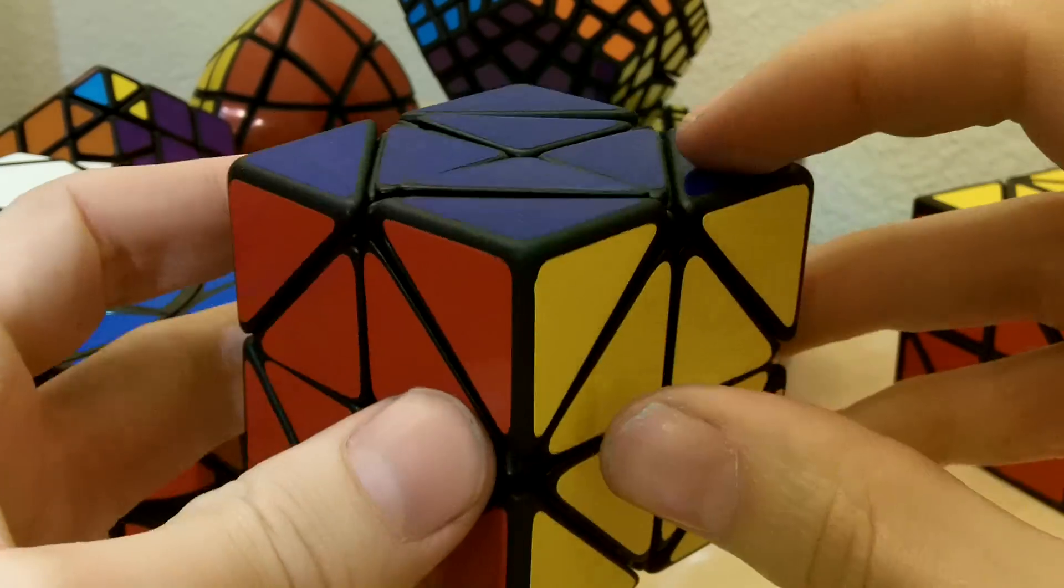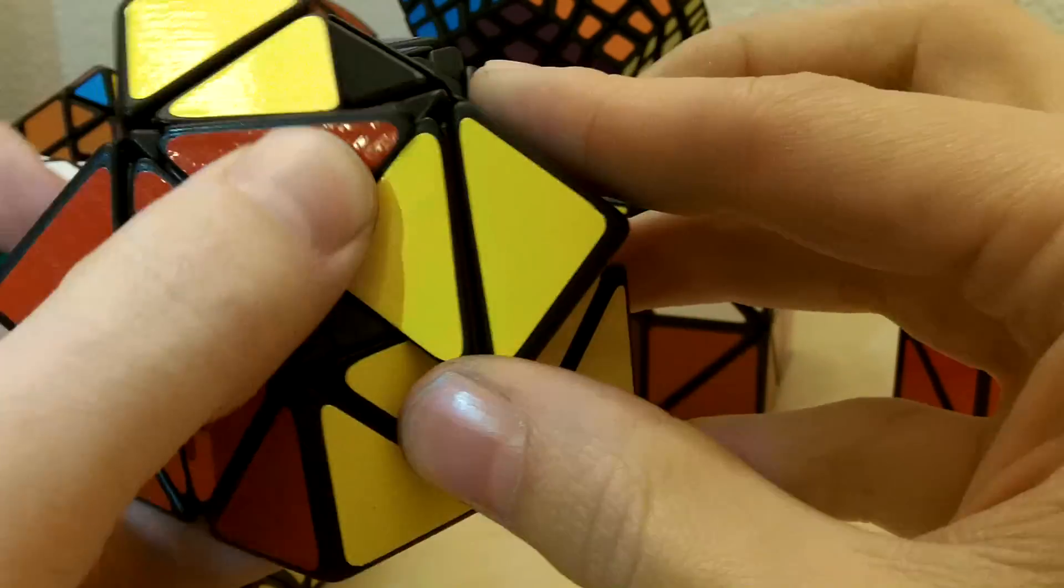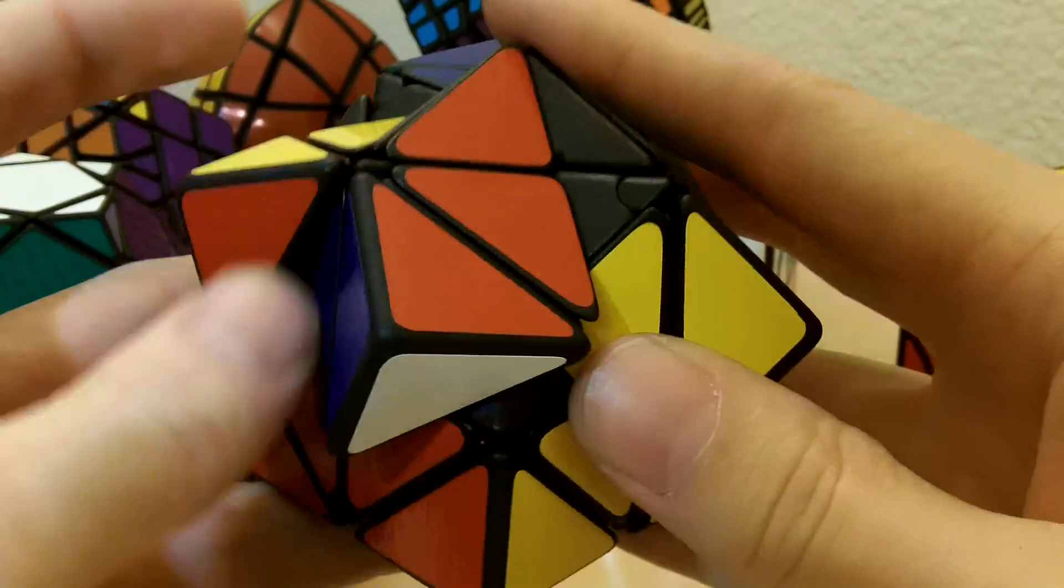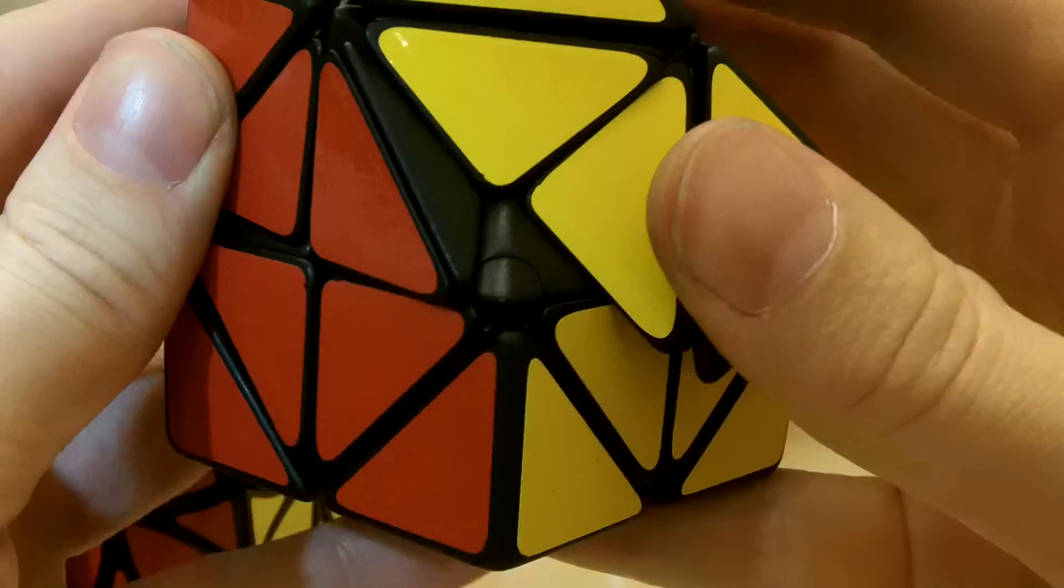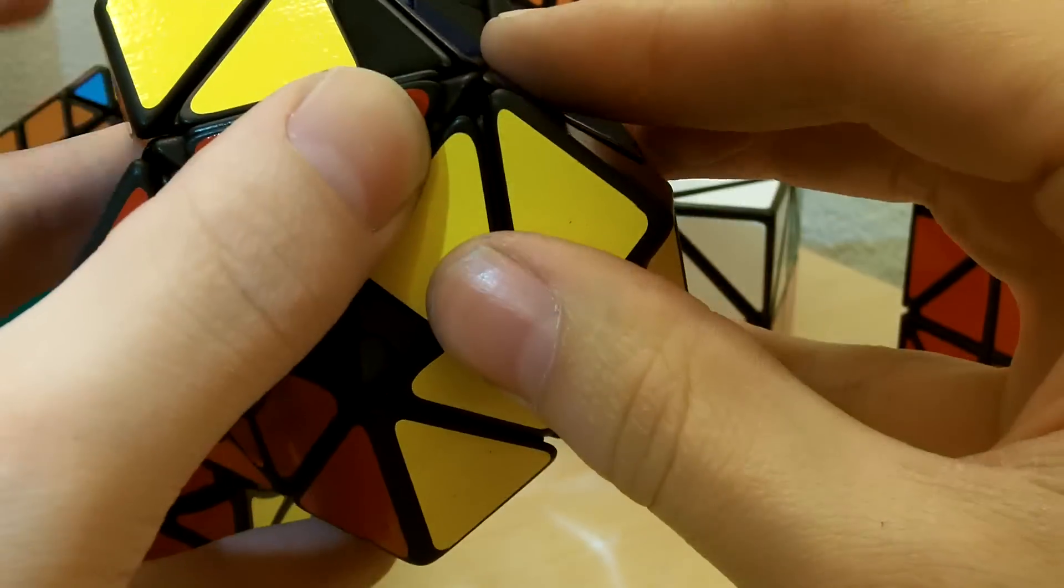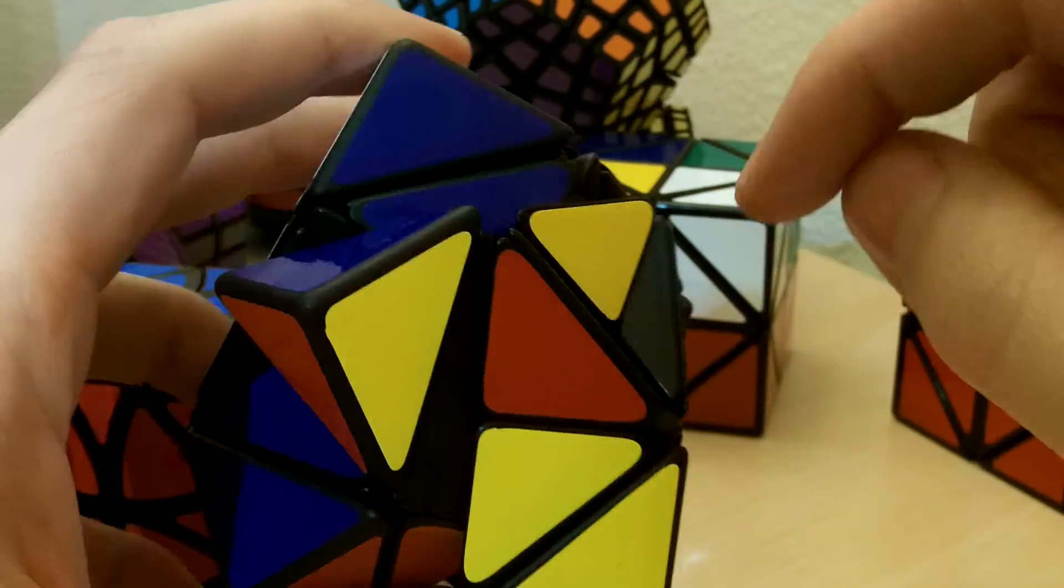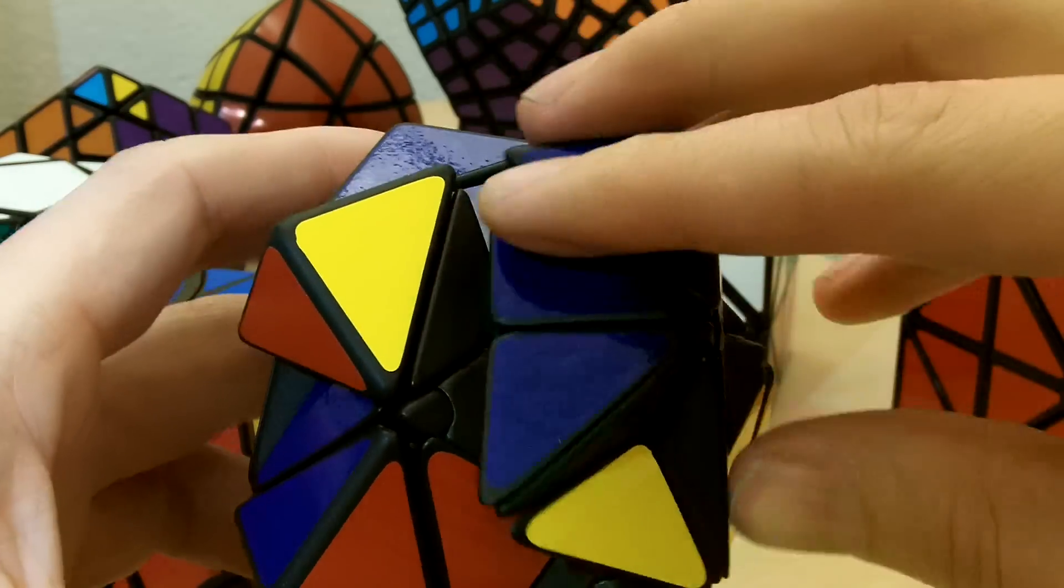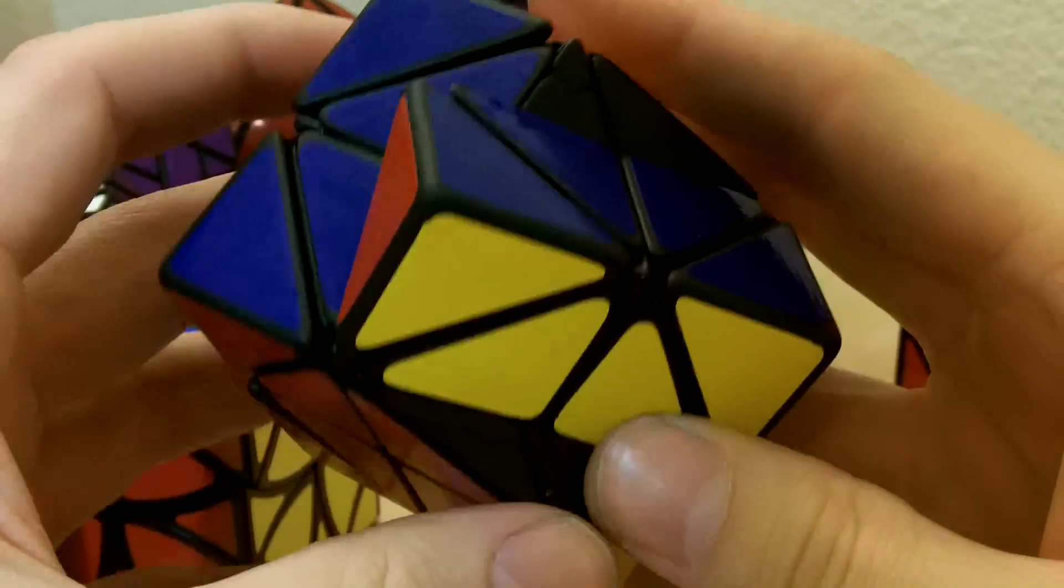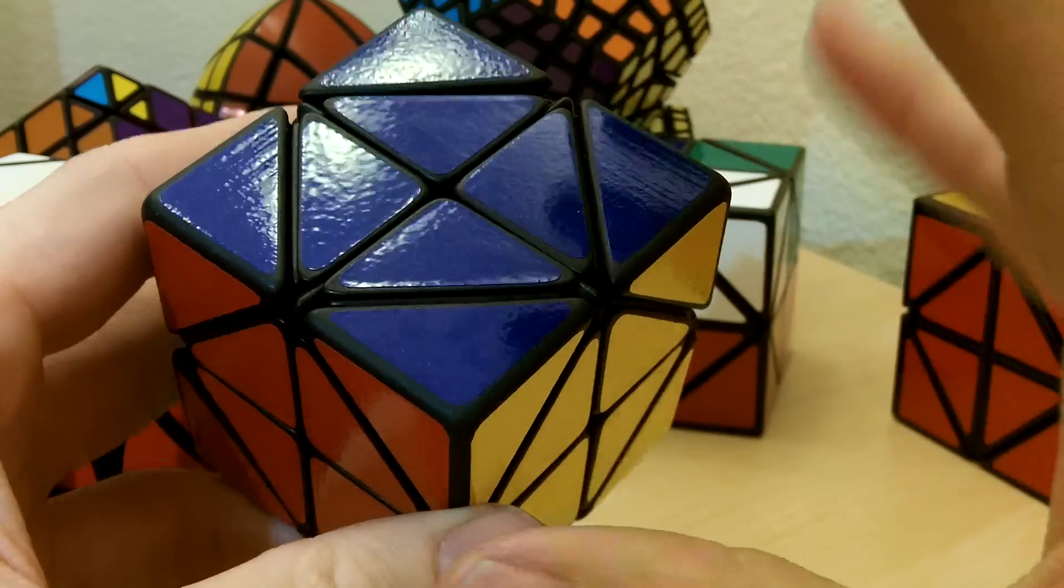But on the unbandaged helicopter cube, not only can you do sort of the normal jumbling, like that, you can also turn this. Eric sliced the part into two pieces. And so now it has additional jumbling moves available to it. This makes the puzzle get ridiculously jumbled.